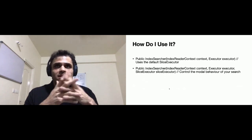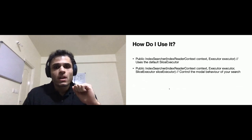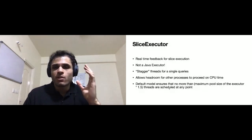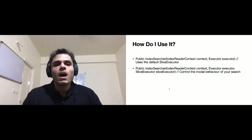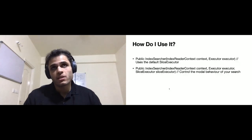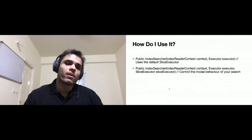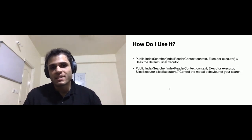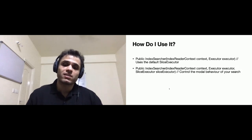If you use the first constructor, you're telling Lucene to use the default SliceExecutor. The default model says that the executor that you've passed in — the Java Executor — at any point, no more than 1.5 times the maximum thread pool size are scheduled in the executor. You're not going to schedule five times the number of executor threads, because that doesn't make sense. That's the default behavior. The other constructor is even more fine-grained: you can pass in your own Java Executor and your own SliceExecutor implementation, which will override the default. For each query execution, your SliceExecutor will be invoked and you can decide how you want to run those threads — you can build your own priority model, do whatever you want, and Lucene will follow the execution strategy set by your SliceExecutor.